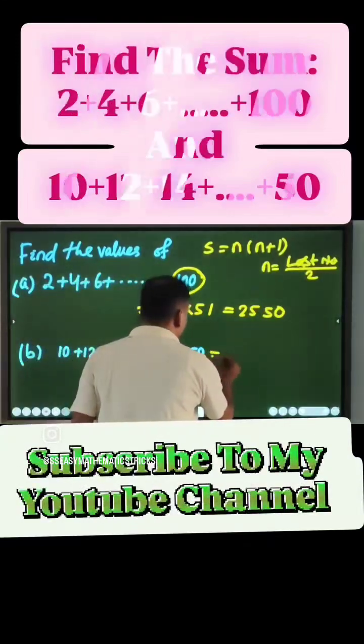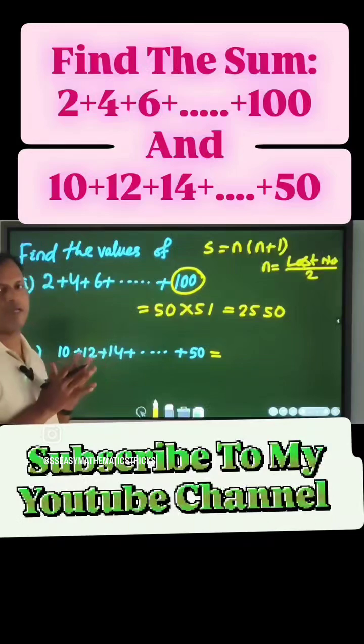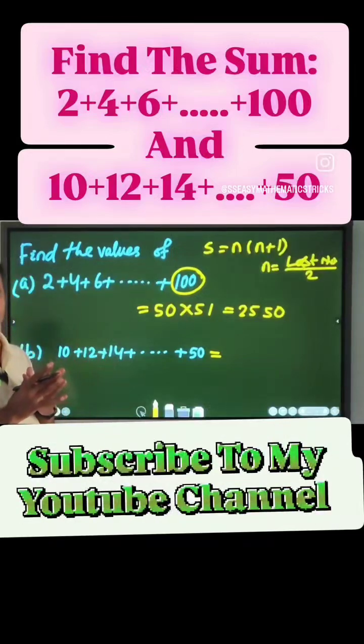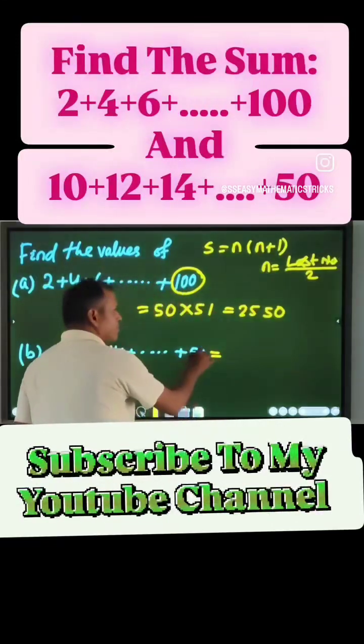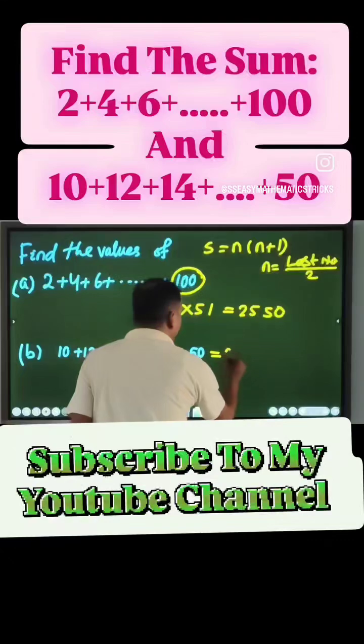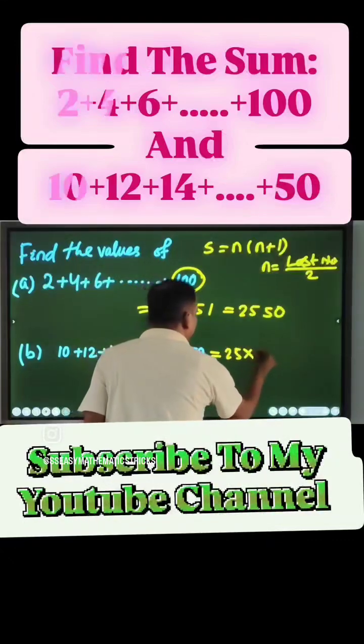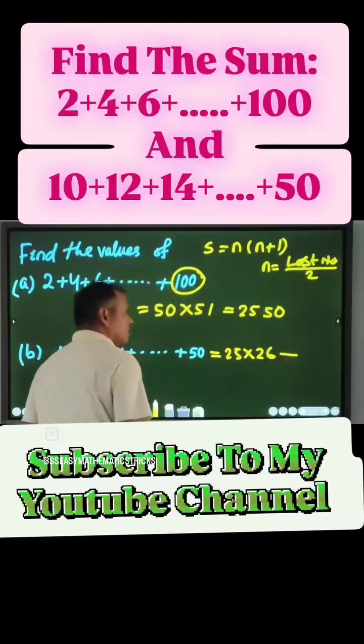In this case first we take all even numbers, sum of all even numbers up to 50. That means half of 50. Half of 50 is 25 into next number 26. Then minus.